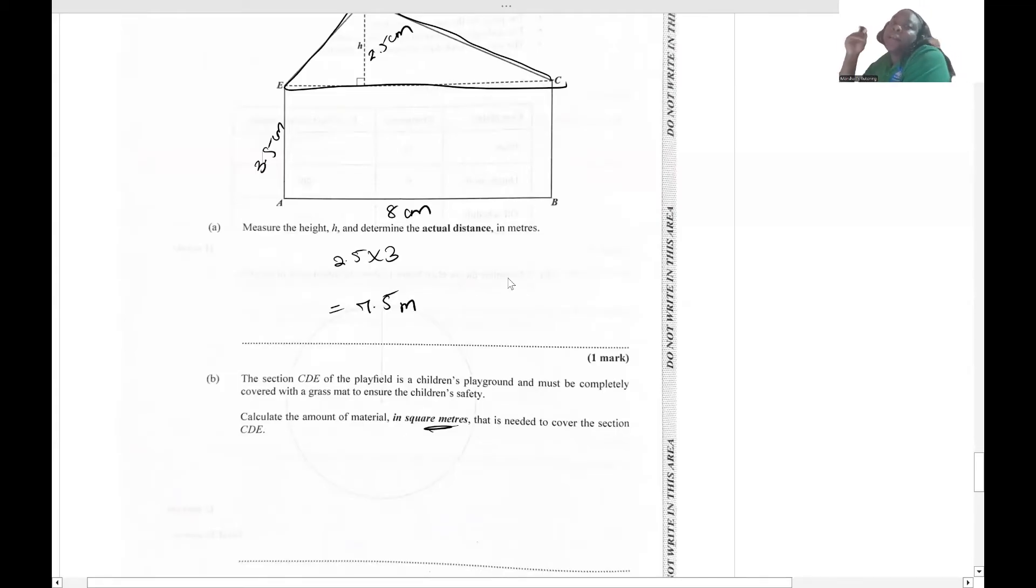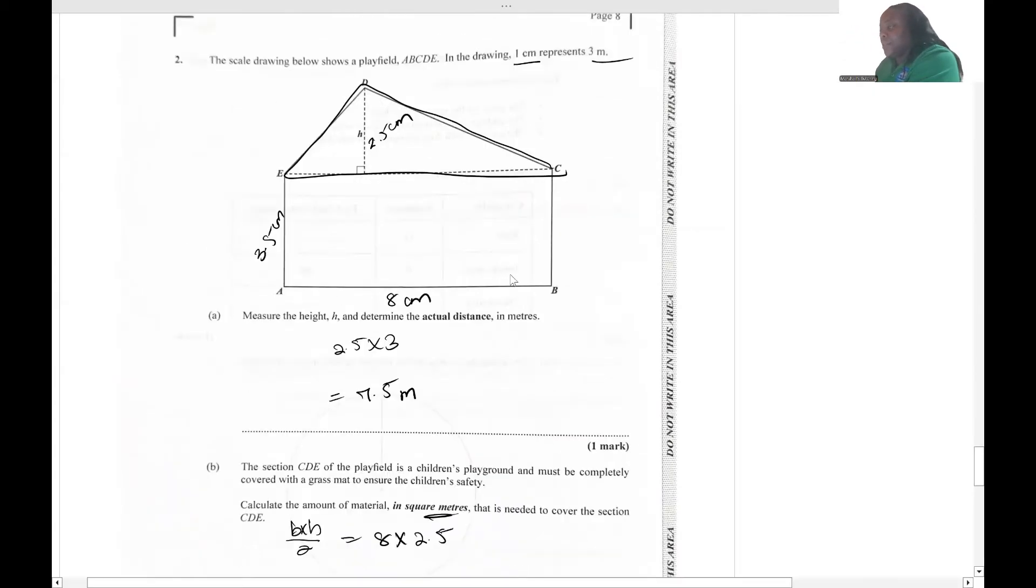We are going to calculate the area of the triangle. Formula for area: base by height divided by 2 or half base by height. Based on my measurement, I got 8 multiplied by the height, which is 2.5, and we divide it by 2. However, what we need to pay attention to is the fact that this measurement is in centimeters. They want it in square meters.